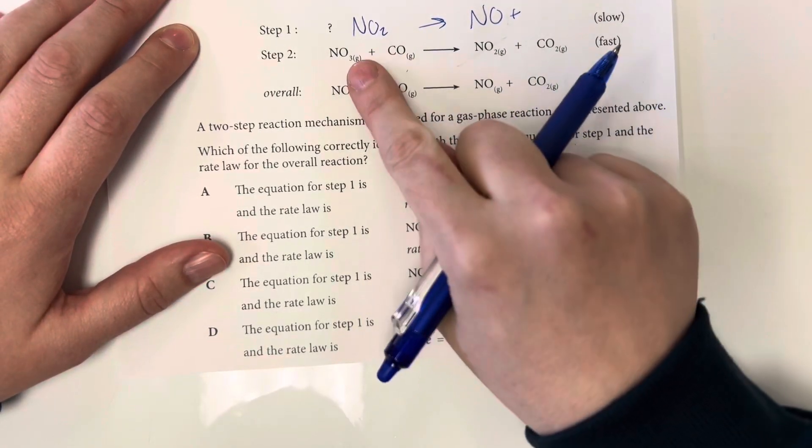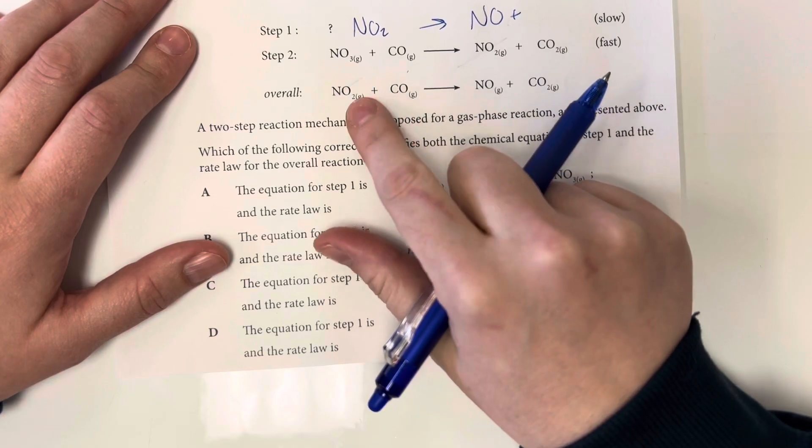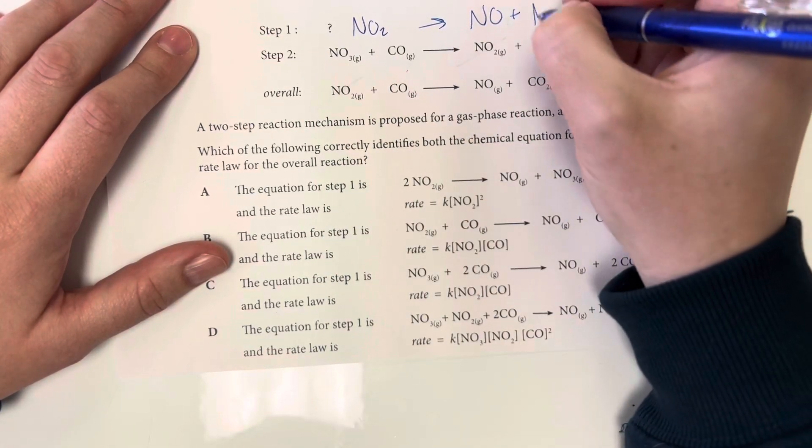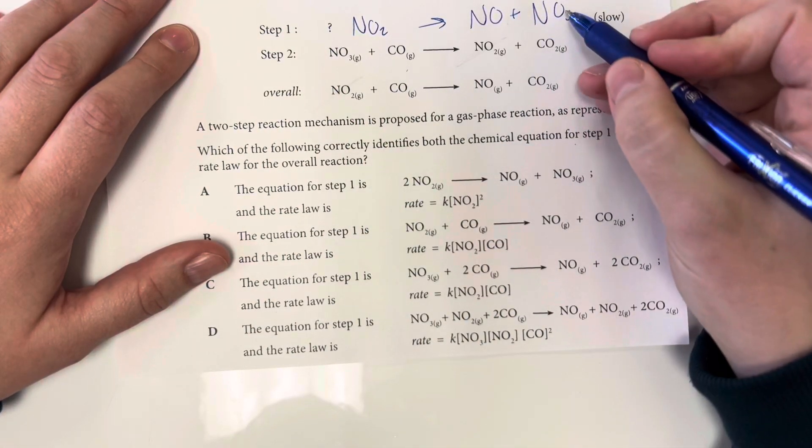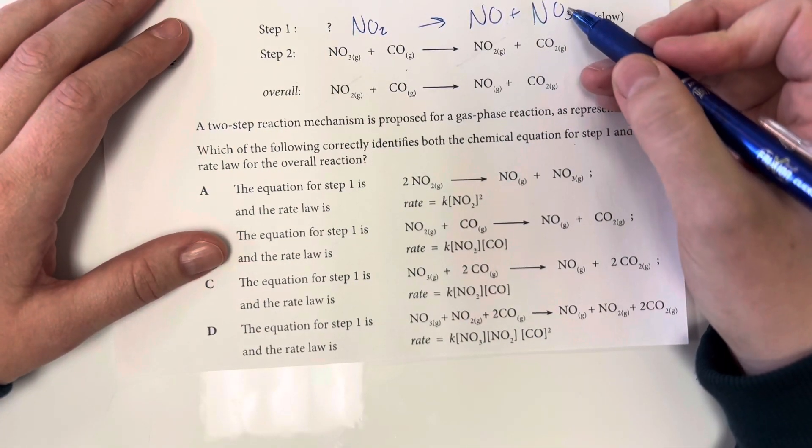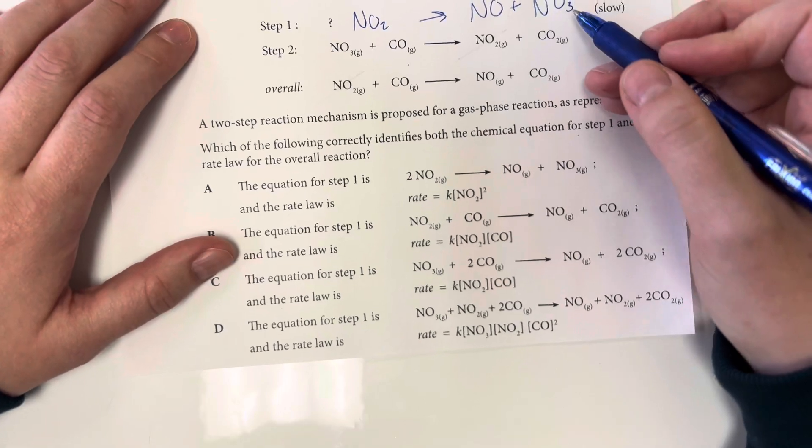And I can see that NO3 does not make it through to the net equation, so that means that it must appear on both the reactants and the product side, so that means that that has to be one of my products.